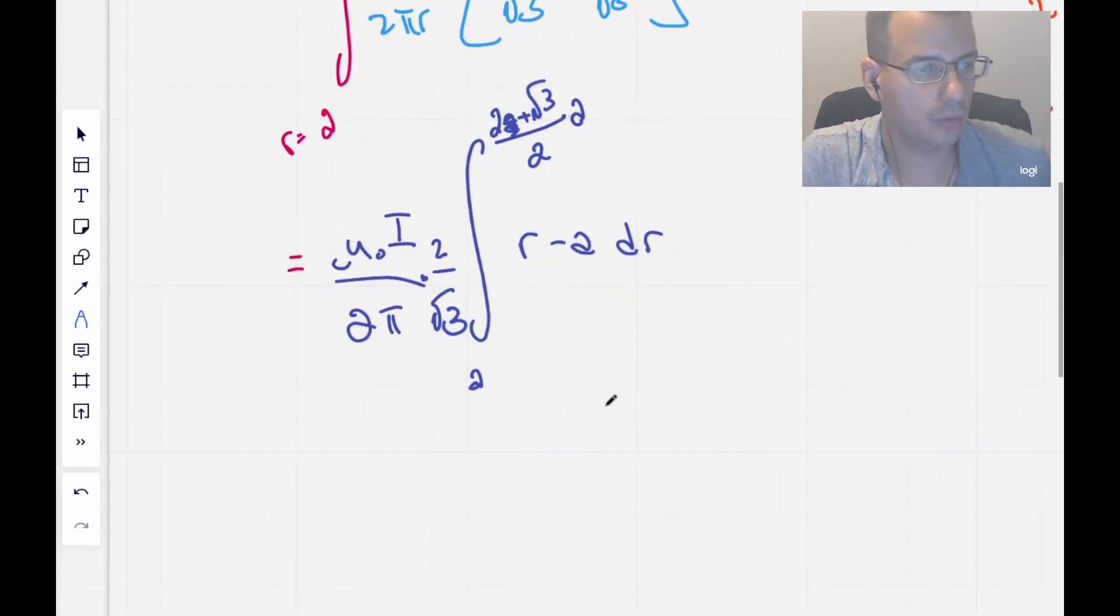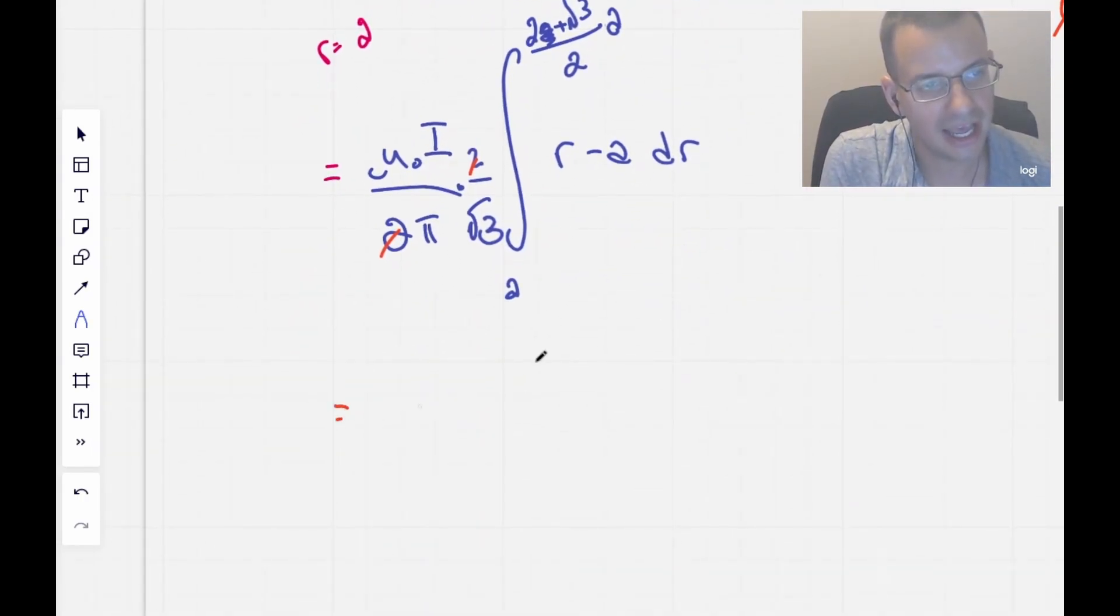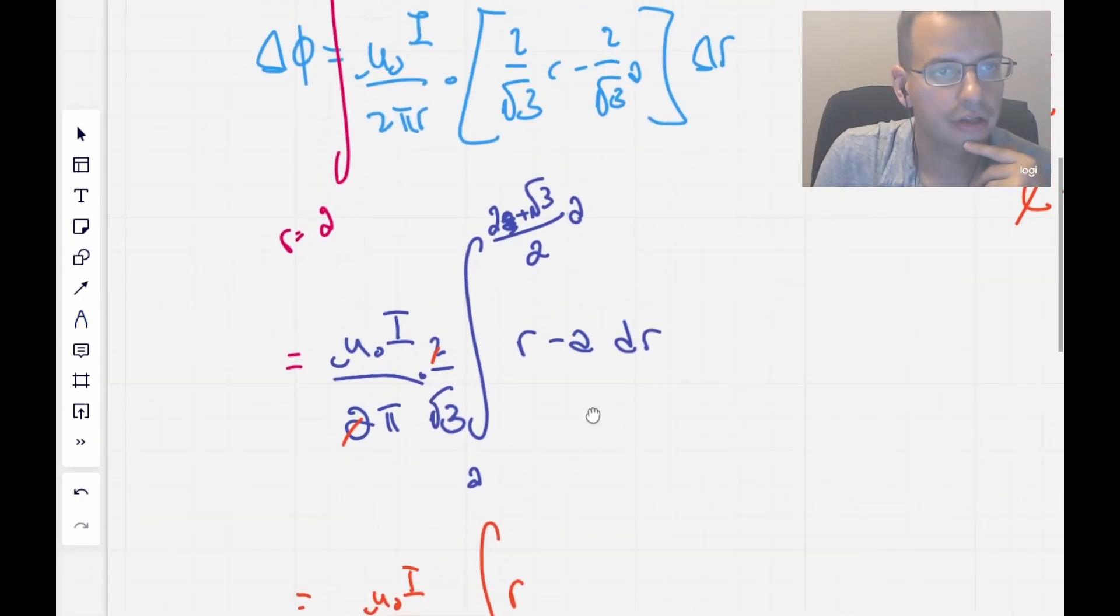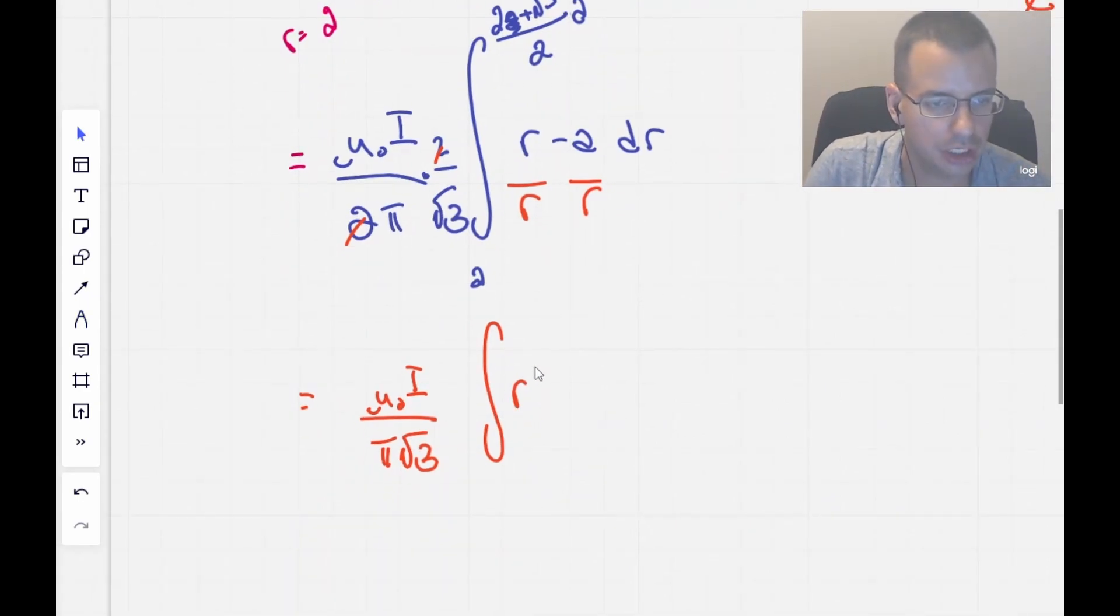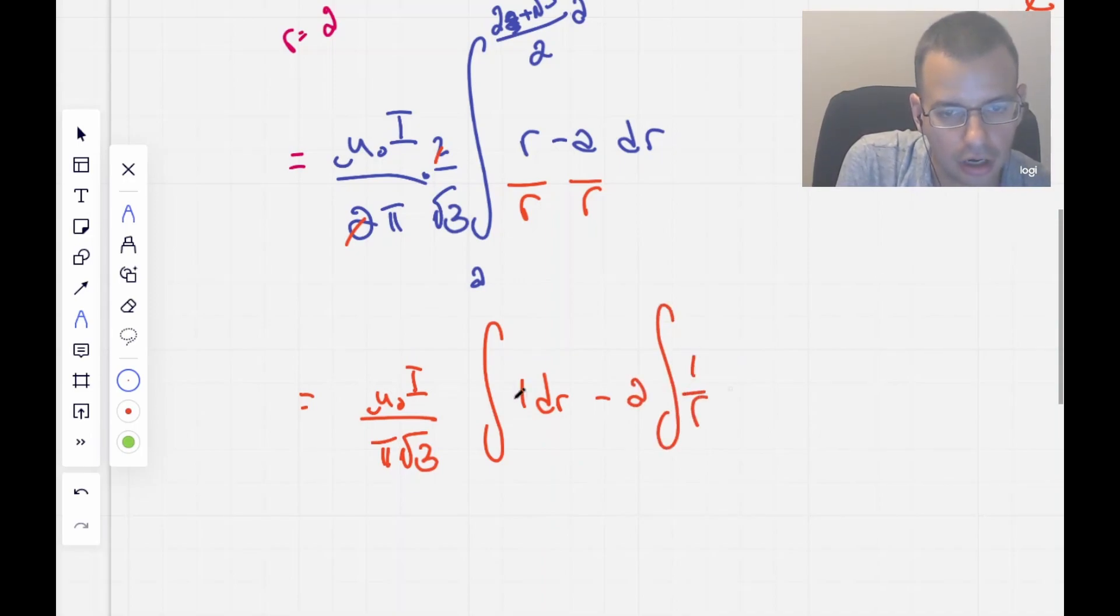We're going to pull out all the constants. Mu naught, constant. Current, as far as we're concerned, is a constant. It varies with time, but it's not r, which is the only constant we care about at this point. So we can also pull out a 2 and a square root of 3. We're going to have the integral of r minus a over r dr from a to 2 plus square root of 3 over 2 a. Do a little bit of canceling. I'm going to rewrite this as mu naught i over pi square root of 3. We have the integral of r over r minus a over r, which becomes the integral of 1 minus a over r dr.